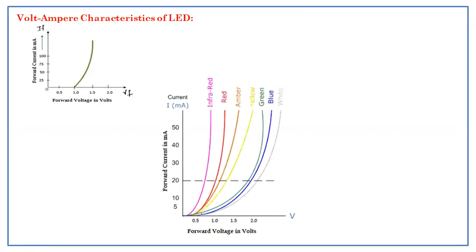If you see the LED with different colors: increasing the voltage up to a certain point produces infrared. Increasing the voltage further gives red, then amber, yellow, green, blue, and white. We get different colors by increasing the supply voltage continuously.